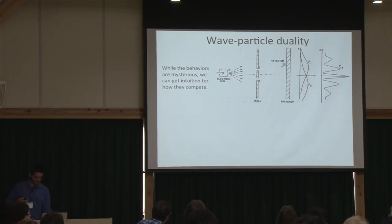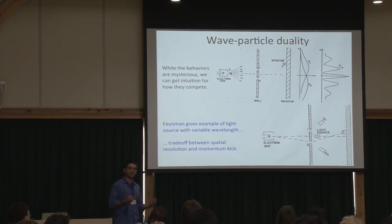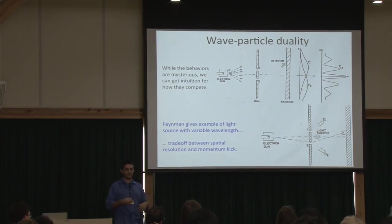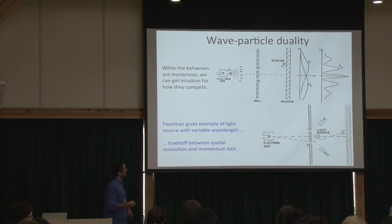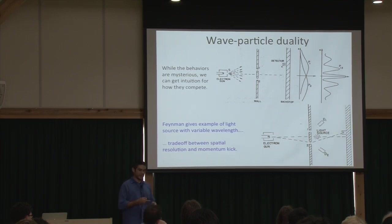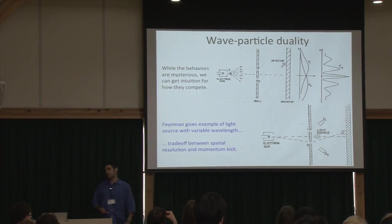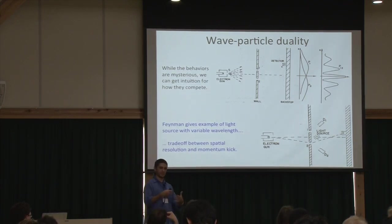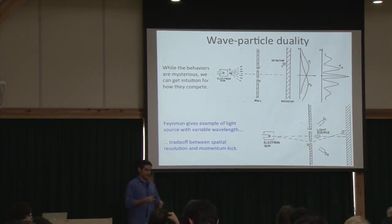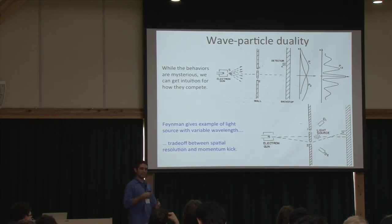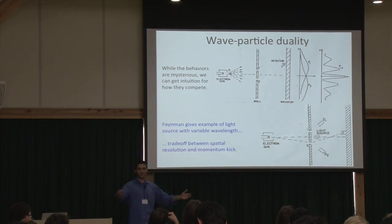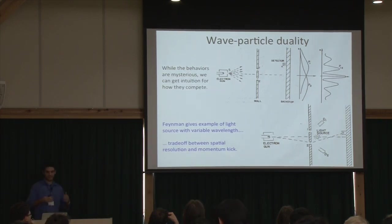Even though the behaviors themselves are mysterious, we can get some intuition as to why they compete. Feynman discusses the double-slit experiment for electrons: suppose you have a light source behind your screen. If a photon bounces off an electron you can learn which path the particle went on, but it gives a momentum kick to the electron, smearing out the interference pattern. If you lengthen the wavelength to reduce the momentum kick, the spatial resolution of your microscope goes down and you can no longer determine which path the particle takes. So there's a nice competition.